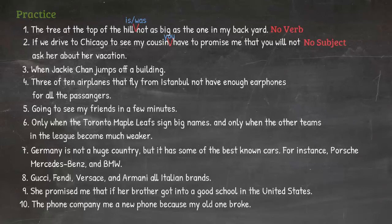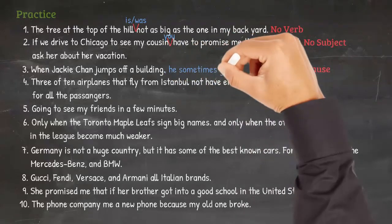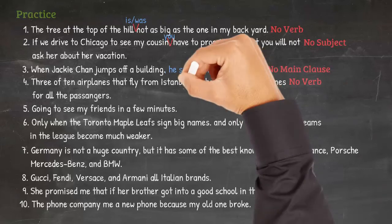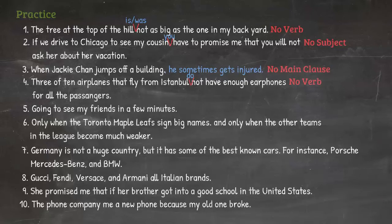Number three: 'When Jackie Chan jumps off a building.' This is just a dependent clause — we need to continue writing. Correction: 'When Jackie Chan jumps off a building, he sometimes gets injured.' Or: 'Jackie Chan sometimes gets injured when he jumps off a building.' Number four: 'Three of ten airplanes that fly from Istanbul not have enough earphones for all passengers.' This sentence is missing a verb. Correction: 'Three of ten airplanes that fly from Istanbul do not have earphones for all passengers.' Number five: 'Going to see my friends in a few minutes.' No subject here. Correction: 'I am going to see my friends in a few minutes.'